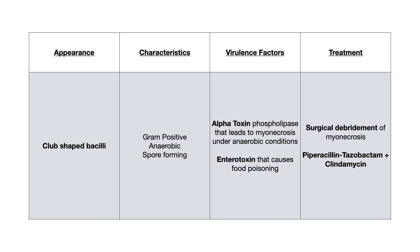Summary: Clostridium perfringens is a club-shaped, gram-positive, anaerobic, spore-forming bacillus. Major high-yield virulence factor is the alpha toxin that breaks down phospholipids, causing myonecrosis and more favorable anaerobic conditions in an already predisposed injury. Remember that vicious cycle. Less high-yield but good to know: the heat-labile enterotoxin that causes food poisoning. Treatment: number one is surgery; number one-A is piperacillin-tazobactam with clindamycin. That's everything you need to know about Clostridium perfringens.